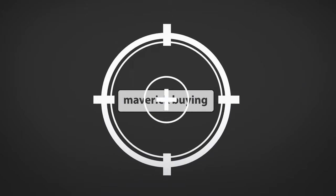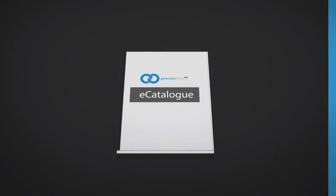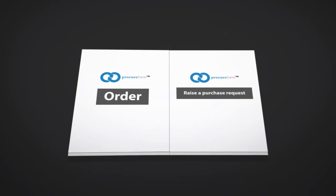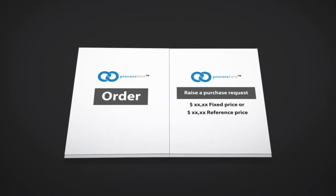You can eliminate maverick buying by adopting the eCatalogue solution, which allows you to order or raise a purchase request from this section, where prices can be fixed or used as a reference price.